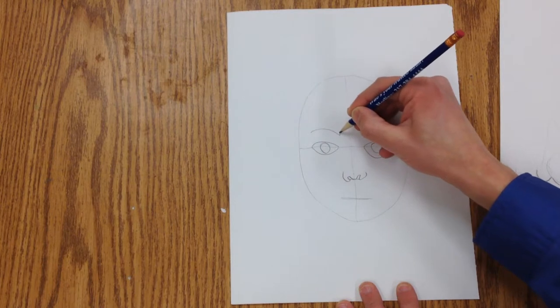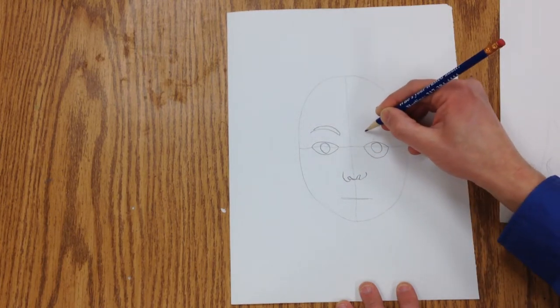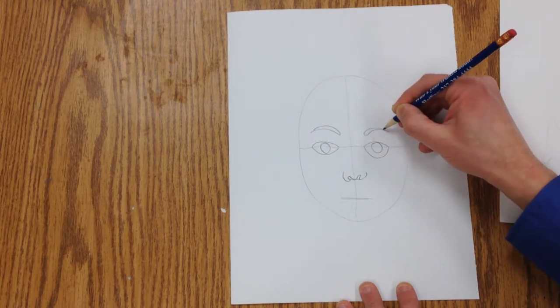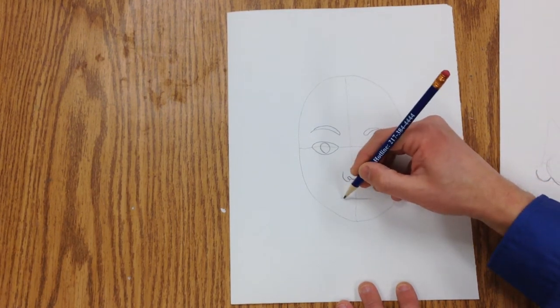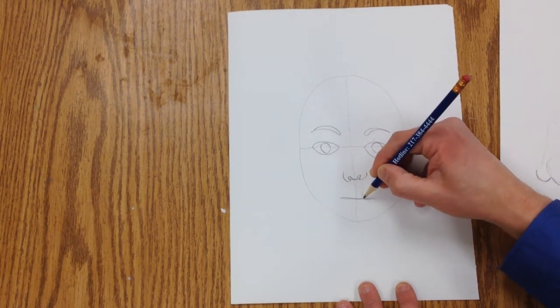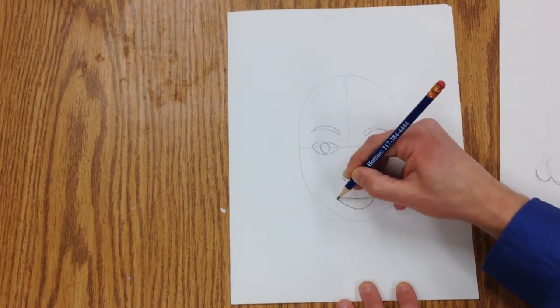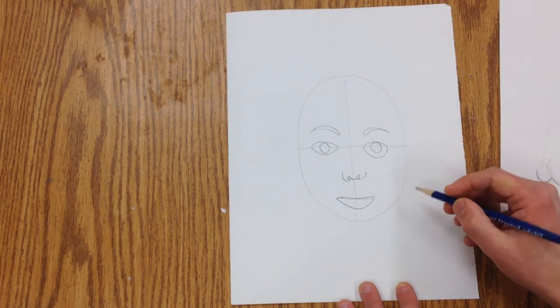And you can add some eyebrows in there too. They're all connected to the nose. And then your mouth. You can draw the teeth in there or you can just have it open.